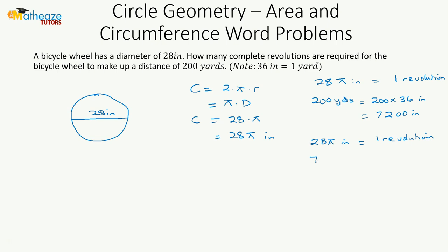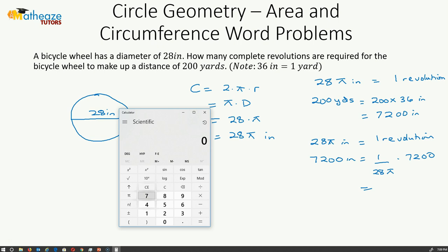Then we want to find out how many revolutions in 7,200 inches. This is going to be 1 over 28 pi multiplied by 7,200.